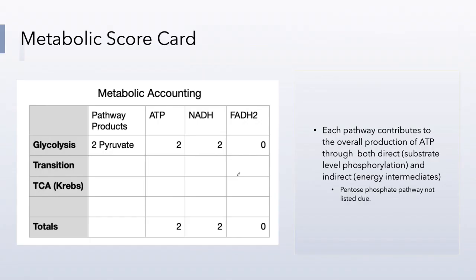Looking at our metabolic scorecard: in metabolism we keep track of the ATP produced. In glycolysis we end up with 2 pyruvate, 2 ATP, 2 NADH, and no FADH2 — that energy intermediate has not been produced yet. Each pathway contributes a certain amount of ATP and energy intermediates in aerobic cellular respiration.